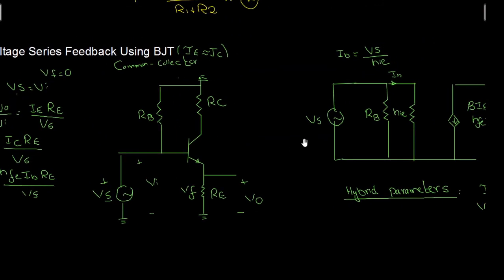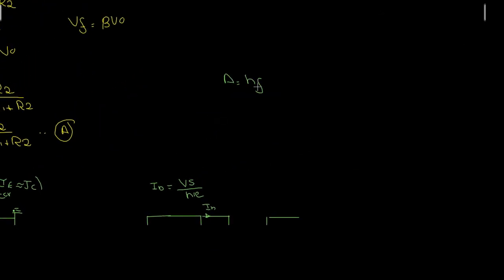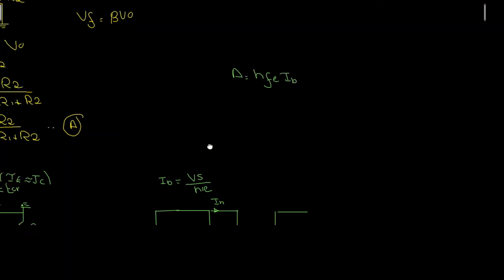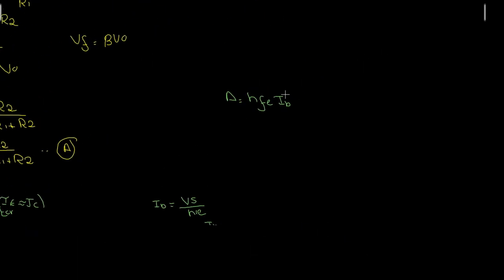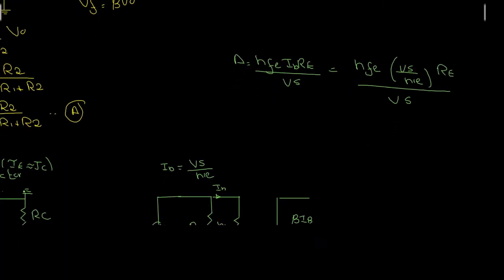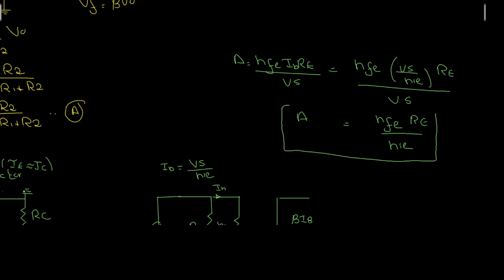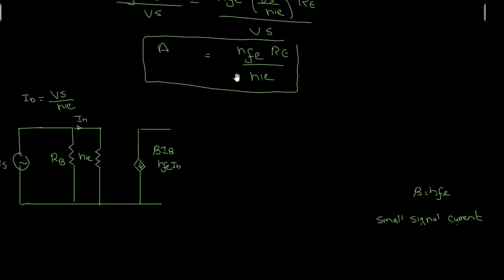So A = HFE·IB·Re divided by Vs. Substituting IB = Vs/HIE: A = HFE·(Vs/HIE)·Re divided by Vs. The Vs terms cancel out, giving A = HFE·Re divided by HIE. This is my gain without feedback.